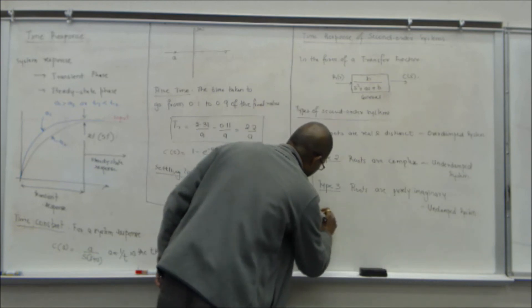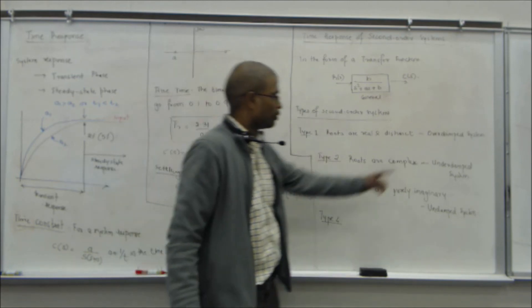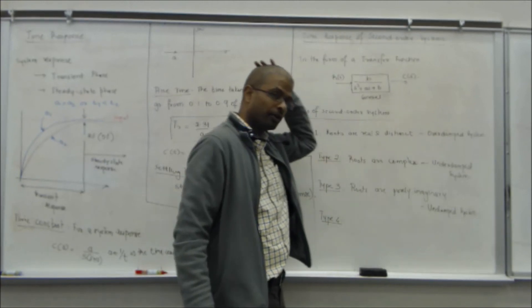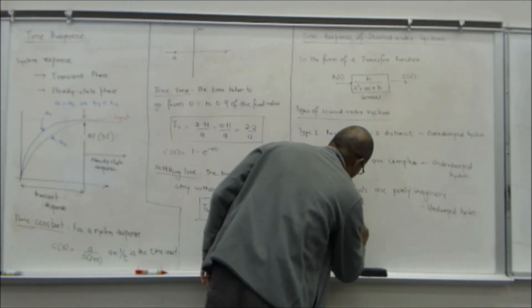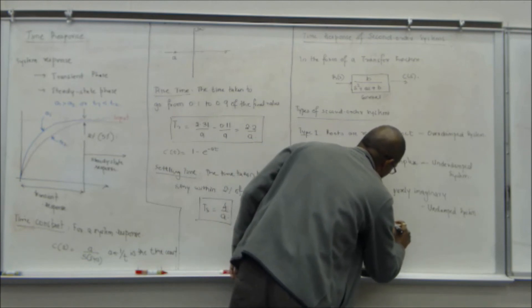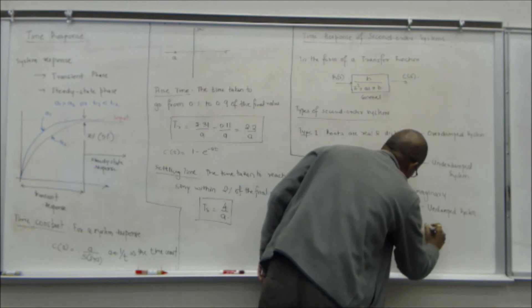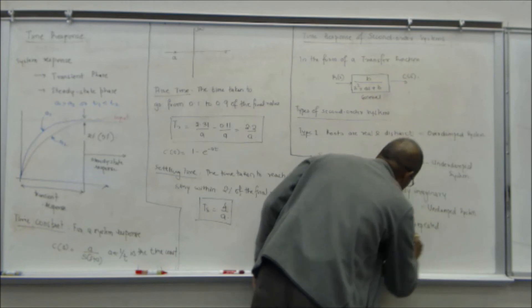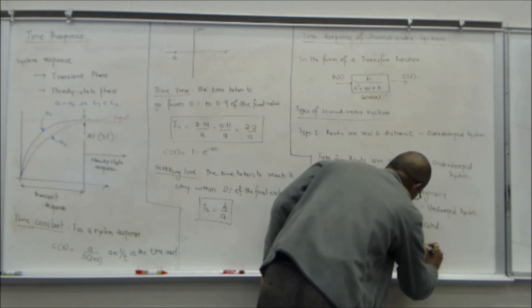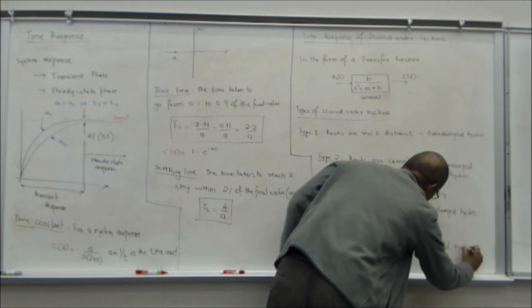I will discuss in detail what these mean. There is an over damped and there is an under damped, and then roots are real and repeated. This is a critically damped system.